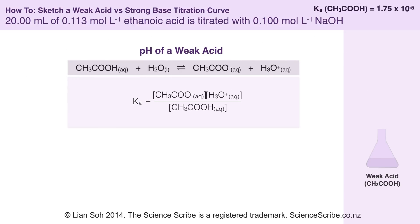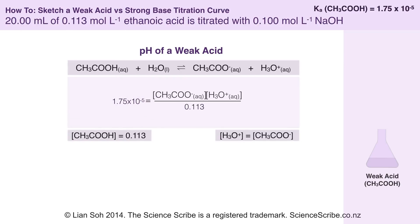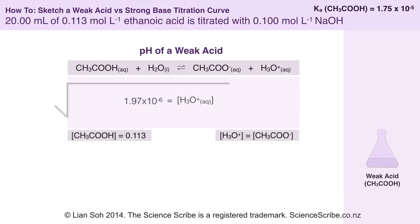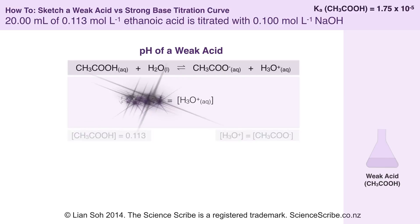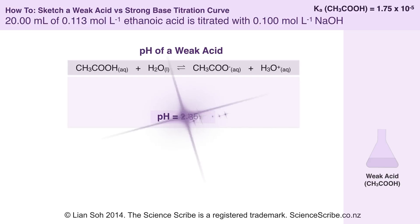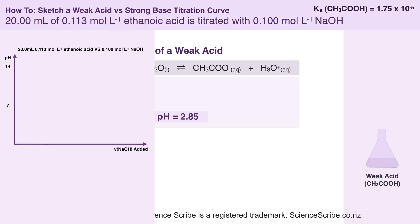The value for Ka has been given in the question, so I can substitute that straight in. My initial concentration doesn't change much, and my second assumption was that the concentration of hydronium ions should equal ethanoic, so we just square the top. Rearranging that helps us calculate the concentration of hydronium ions. Once I know the concentration of hydronium ions, I can use my pH formula, and the pH at the start of the titration is 2.85.